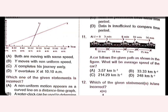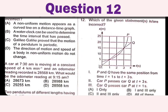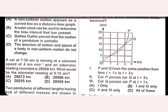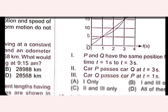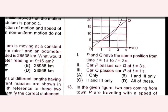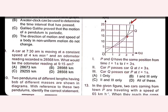Which statement is incorrect about cars P and Q on the position-time graph? P and Q have the same position from t = 1s to t = 3s — this is incorrect. Car P passes car Q at t = 3 seconds is correct. Car Q passes P at t = 1 second is also correct. Since only the first statement is incorrect, option A is the right answer.